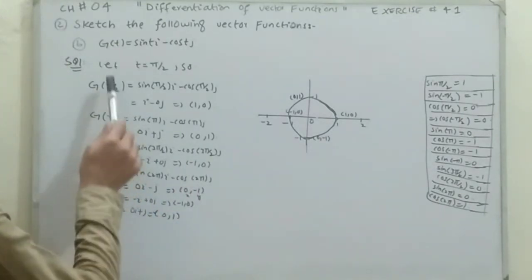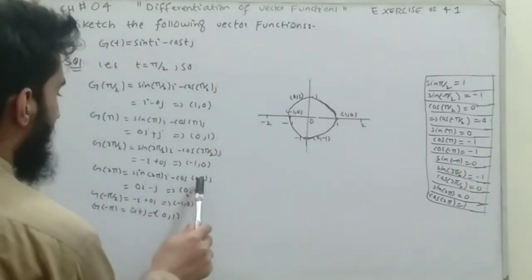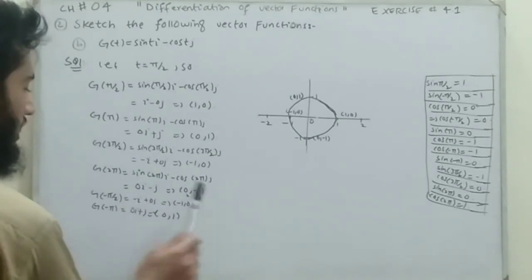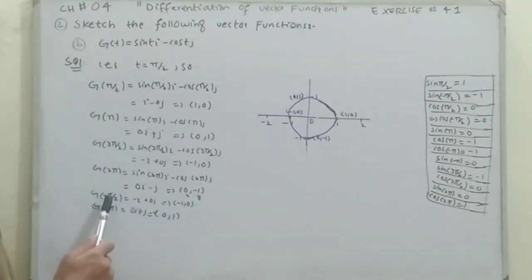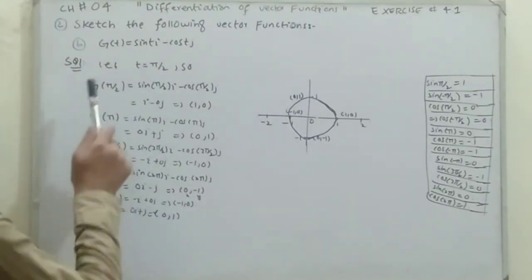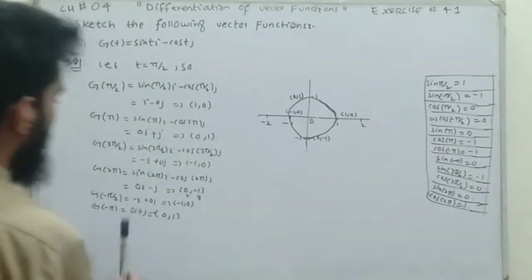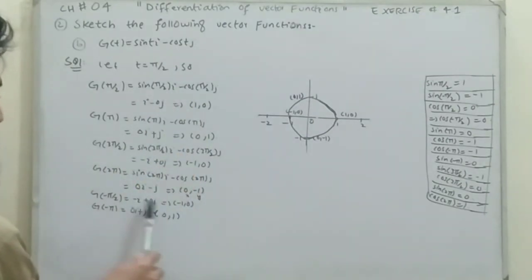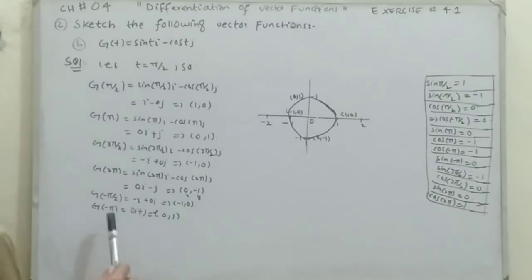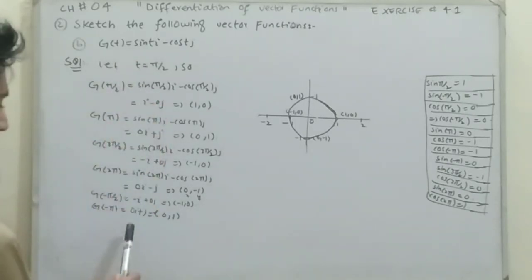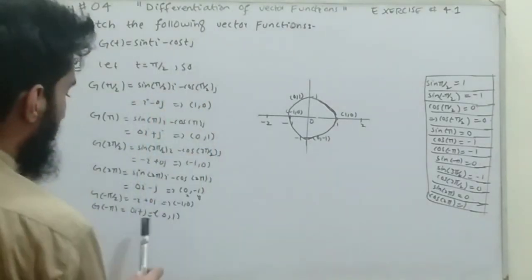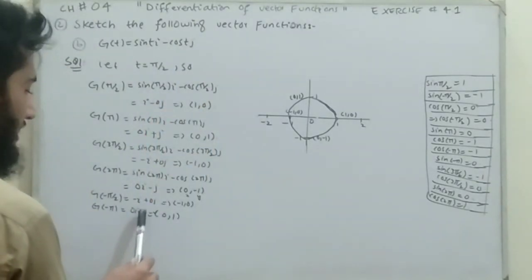For t = 2π: sin(2π) = 0, and cos(2π) = 1, so the j-component is -1, giving the ordered pair (0, -1). For t = -π/2: sin(-π/2) = -1, giving -i, and cos(-π/2) = 0, so the ordered pair is (-1, 0). For t = -π: sin(-π) = 0 and cos(-π) = -1; negative times negative gives positive 1, so the ordered pair is (0, 1).